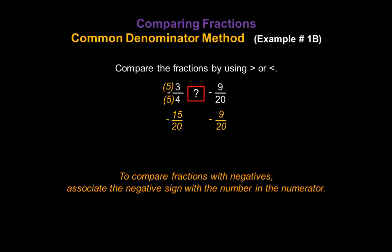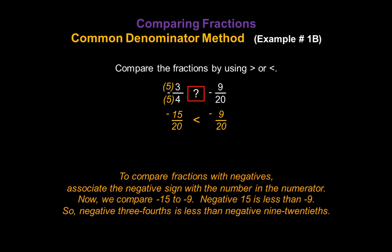To compare fractions with negatives, associate the negative sign with the number in the numerator. If your negative signs are in the middle, move them straight up so they're right beside the numerators. Now we can compare negative 15 to negative 9. Since negative 15 is less than negative 9, that means negative 3 fourths is also less than negative 9 twentieths.